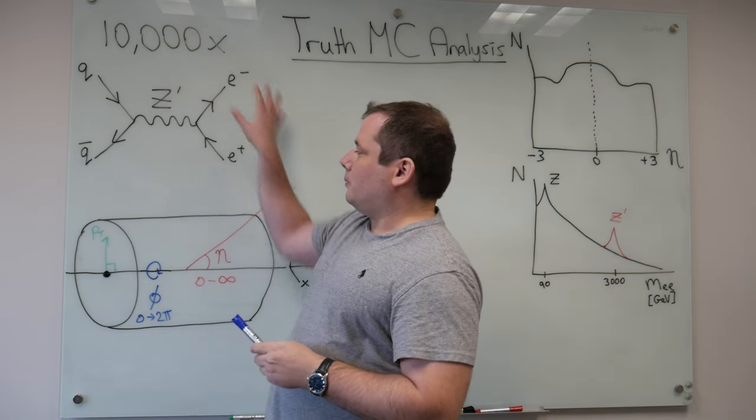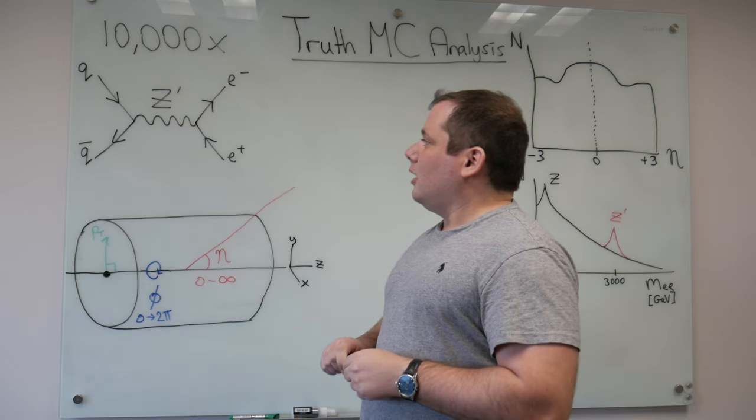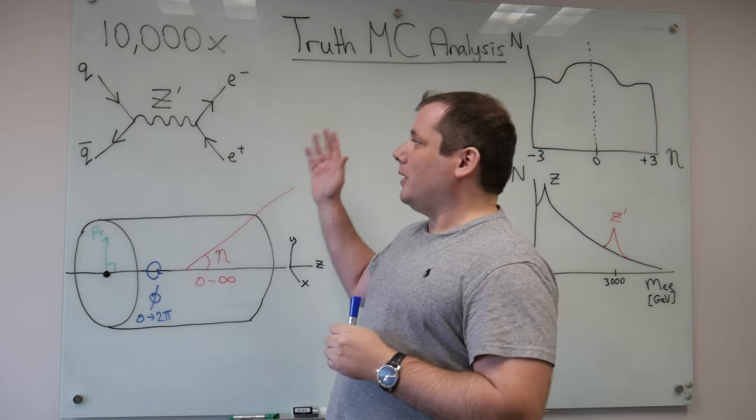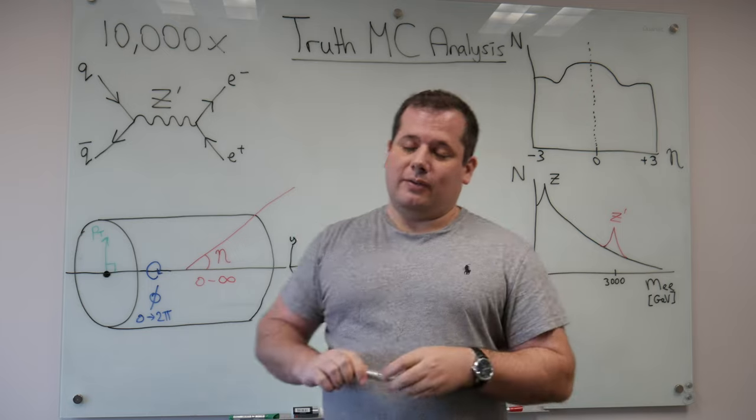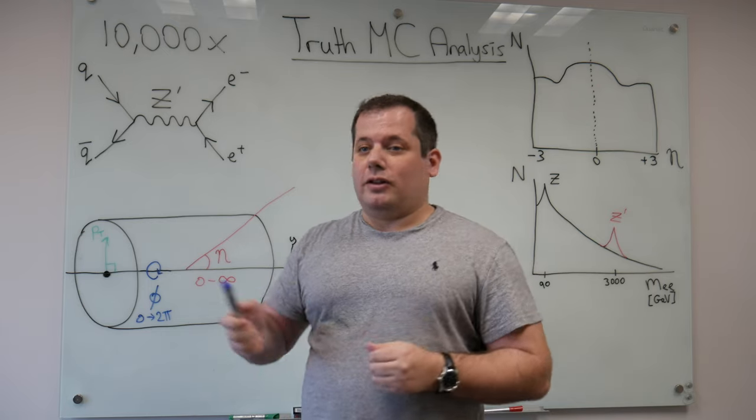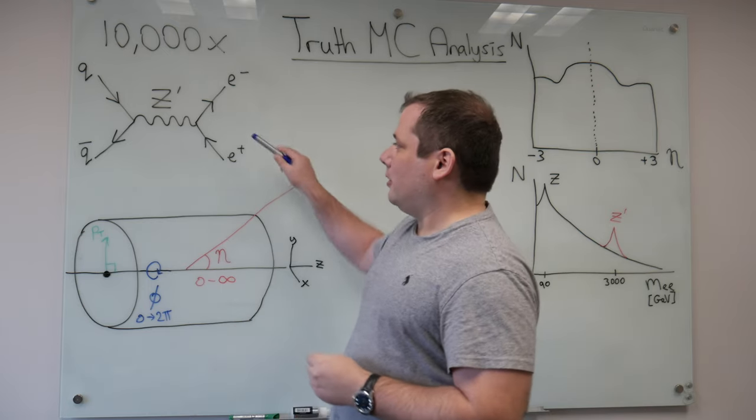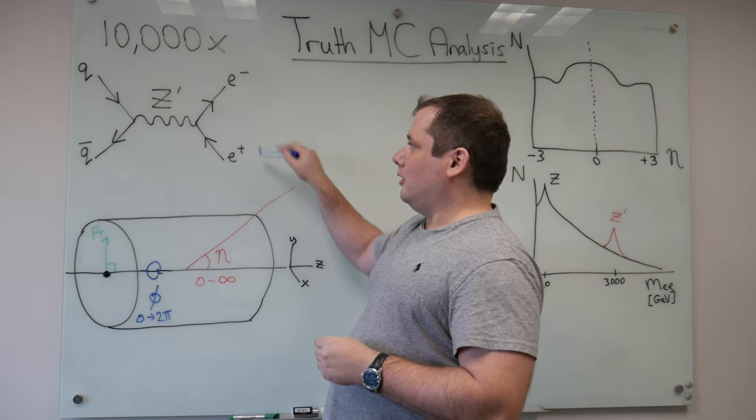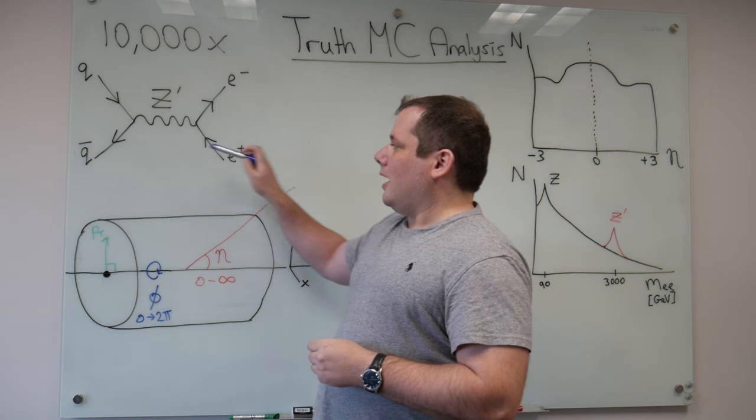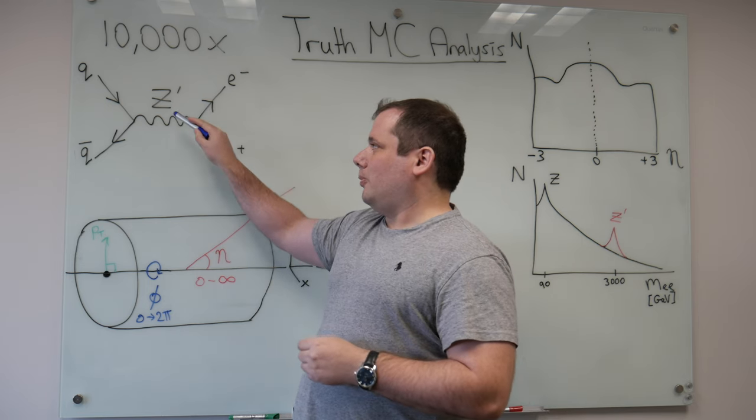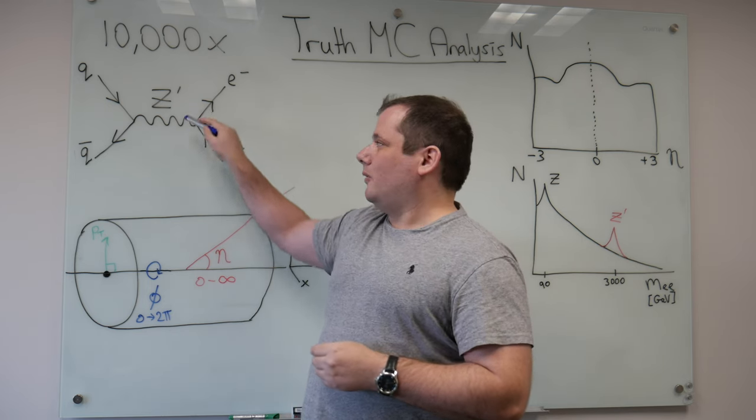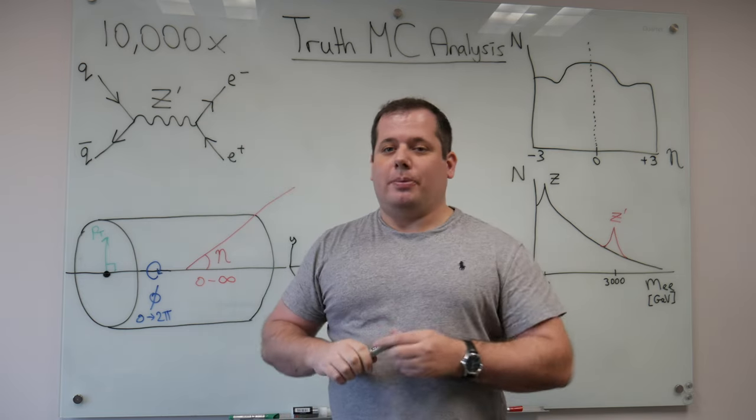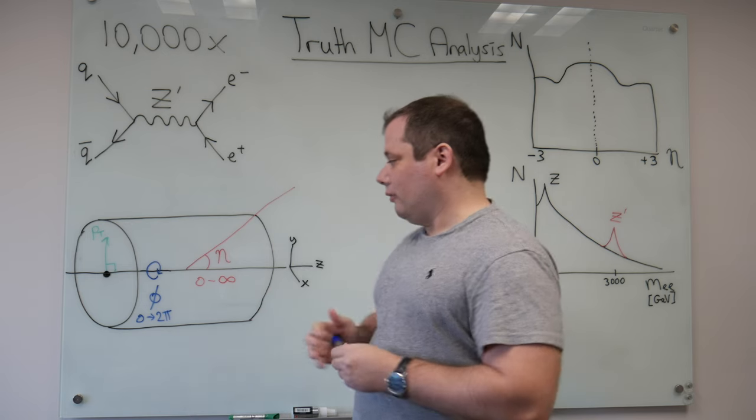So we have this process that we've generated now. So going back to the diagram earlier of how this looks in the detector, we now have to figure out how we can actually identify these events and then figure out how to reconstruct. Because remember, the detector is only going to see these objects at the end, just the electron and the positron. It won't be able to directly see the Z'. We have to infer the Z' interference by reconstructing these particles and then adding back together what happened in the original collision.